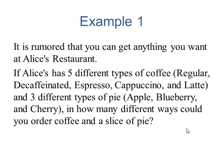It is rumored that you can get anything you want at Alice's Restaurant. If Alice's has five different types of coffee and three different types of pie, in how many different ways could you order coffee and a slice of pie?